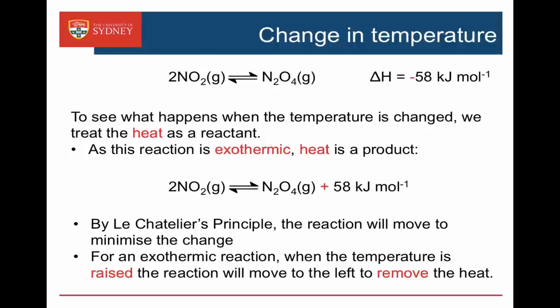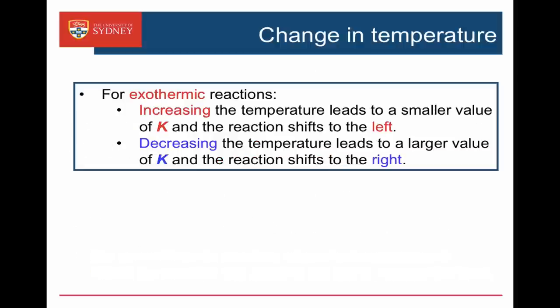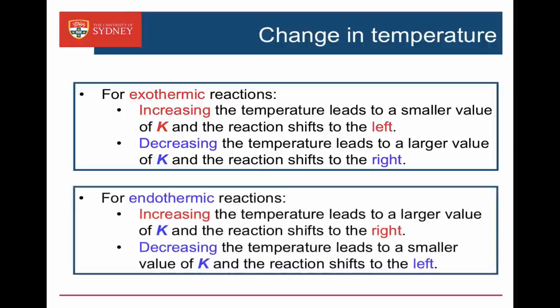So if we increase the temperature, the reaction shifts to the left-hand side to try to remove it — the reverse reaction is endothermic. For exothermic reactions, increasing the temperature leads to a smaller value of K and the reaction shifts to the left; decreasing the temperature gives a larger value of K and the reaction shifts to the right. For endothermic reactions, increasing the temperature leads to a larger value of K and the reaction shifts to the right; decreasing the temperature leads to a smaller value of K and the reaction shifts to the left.